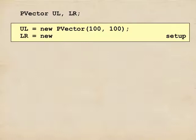Let's do the same thing for lower right and I'll put the lower right corner at 500, 500. Great. Now I have my points.